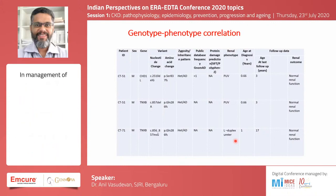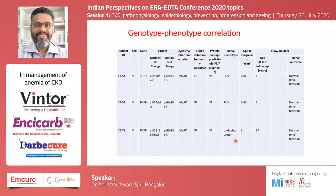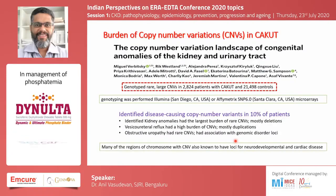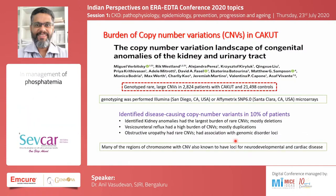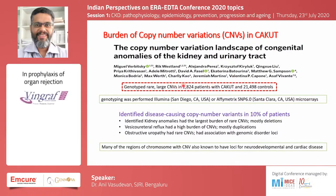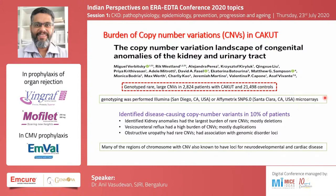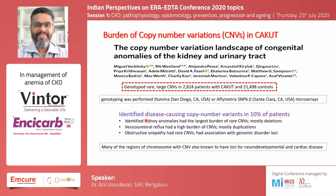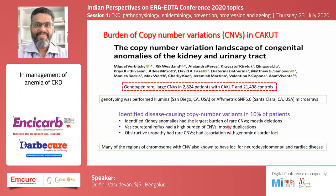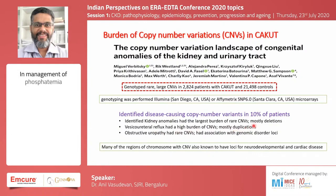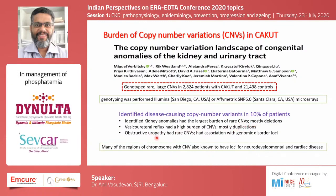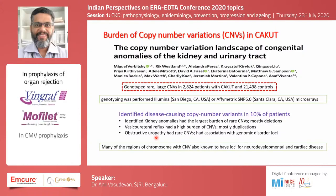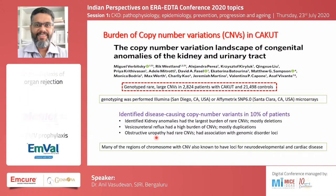Apart from single gene mutations, copy number variations (CNVs) have been identified in a significant number of CAKUT cases—large deletions spanning many genes involving more than 1,000 base pairs. In one of the largest studies from the US involving close to 3,000 CAKUT patients and 21,000 controls using microarray, CNVs were found in 10% of patients. CNVs were most commonly associated with renal hypodysplasia—mostly deletions with reflux—while posterior urethral valve and other obstructive uropathies had the least burden of CNVs.